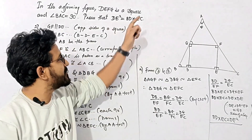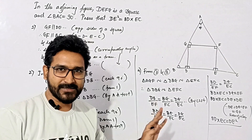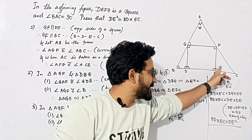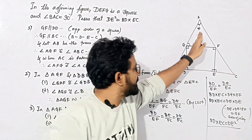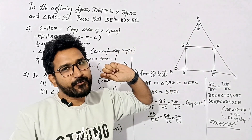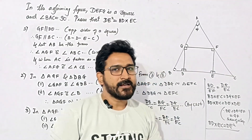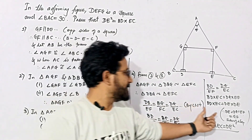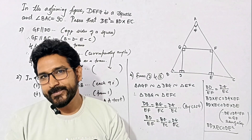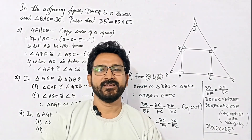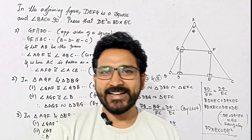Therefore DE squared equals BD into EC. Hope you have understood. If you still have any doubt in any of these steps, you can tell me in the comment section. These two triangles being similar means all sides are proportional, and since DG and EF equal DE as sides of a square, we get DE squared equals BD into EC. Hope you have understood. We will meet in the next session — till then, take care, bye bye.